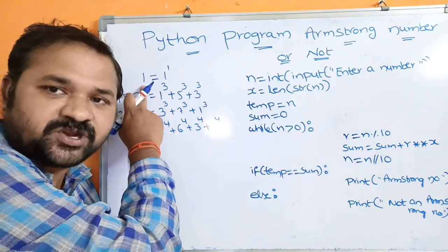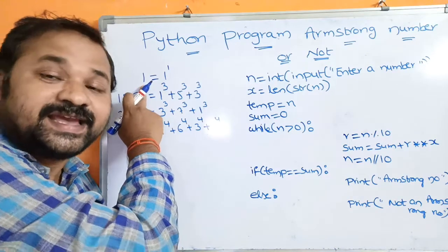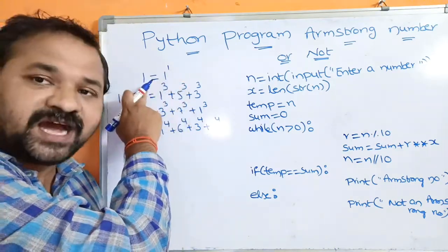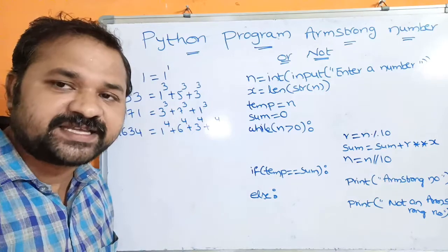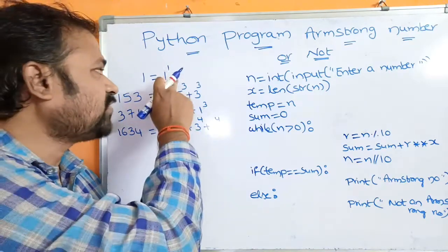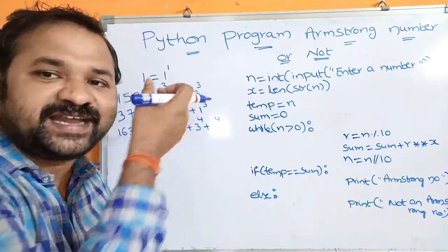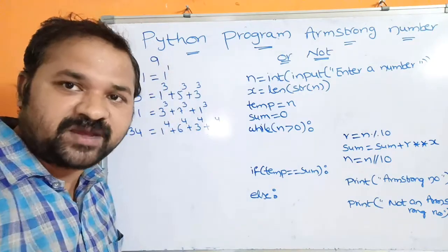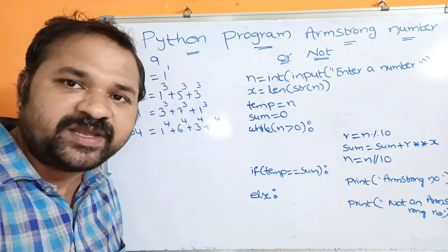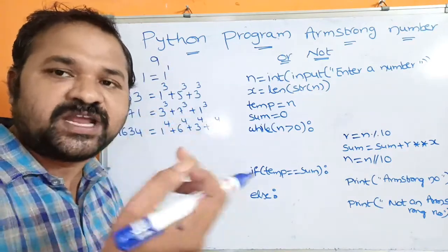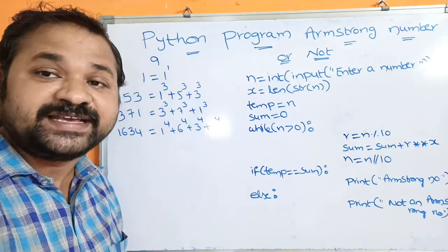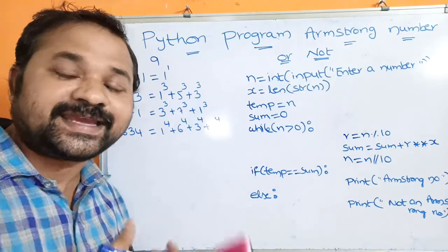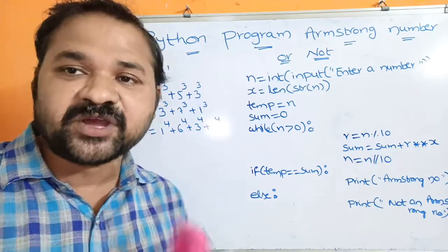So 1 is an Armstrong number, and any single digit number is an Armstrong number. In 1, there is only 1 digit, so 1 power 1 is nothing but 1. If you take 9, it also has only 1 digit, so 9 power 1 is nothing but 9. So we can say that any single digit is an Armstrong number.